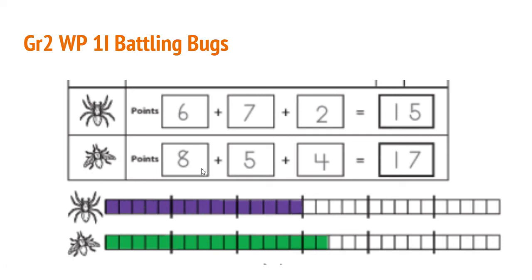Same thing for the fly. The fly rolled an 8, a 5, and then a 4. Those were colored in down here for a total of 17.